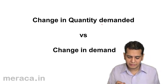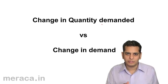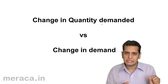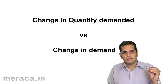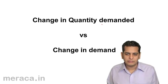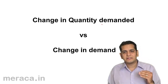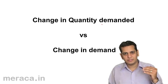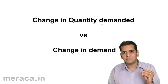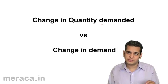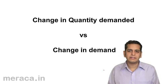Change in quantity demanded means when there is a change in units demanded of a commodity due to change in price. We've studied in the law of demand that quantity demanded of a commodity changes because of change in price — when the price goes up, the quantity demanded comes down, and when the price comes down, the quantity demanded goes up. So this we call as change in quantity demanded.